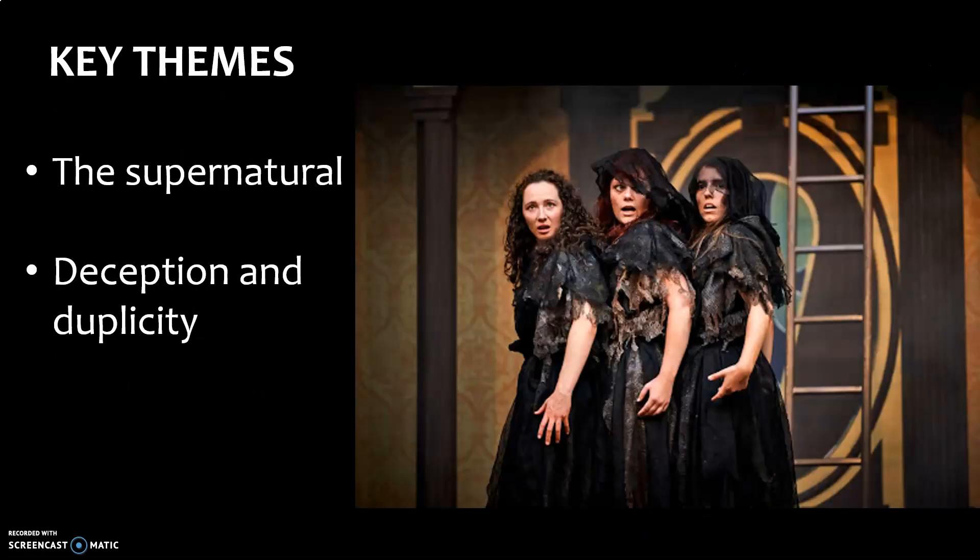Key themes already established in this scene: definitely the supernatural by having these witches on the stage, but also this idea of deception — to deceive someone is to try and trick them. Duplicity is a lovely word to try and use when you're analysing Macbeth. Duplicity comes from the word duplicitous, meaning two — like duplicate. So duplicity is when you've got two things going on at once, and it's a real theme that runs throughout the play, established in this very first scene.